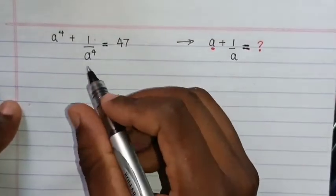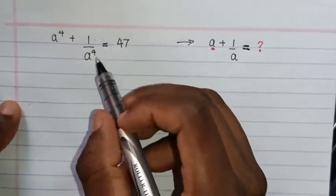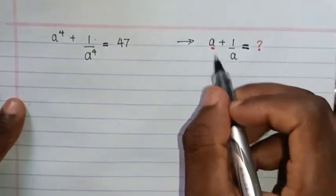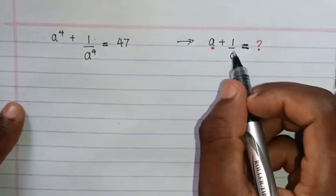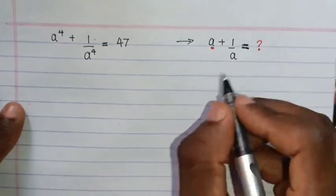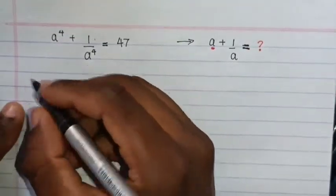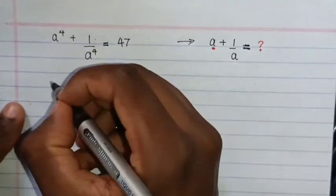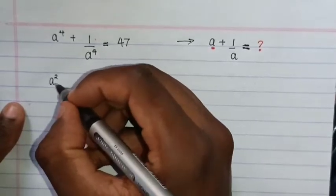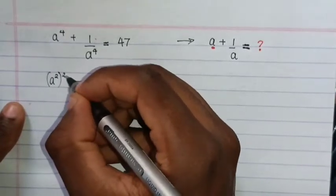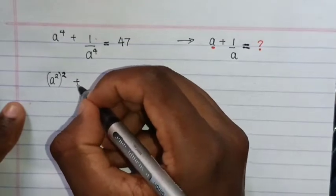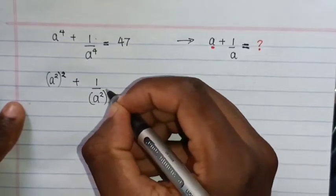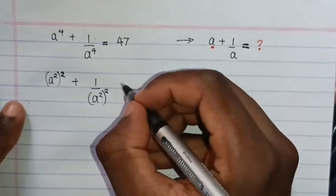Hello. How to solve this equation into the form of a plus one over a. So let's start. This one is the same as a square bracket squared plus one over a square bracket squared.